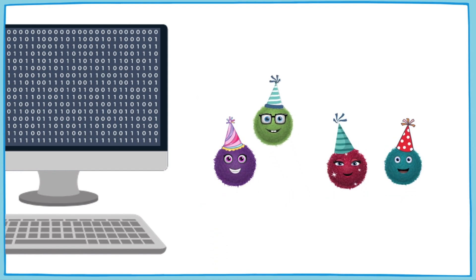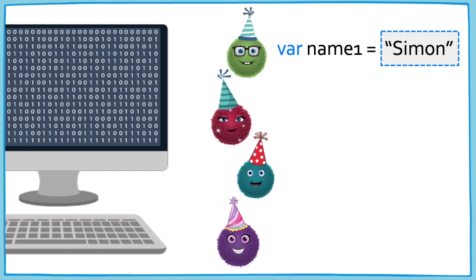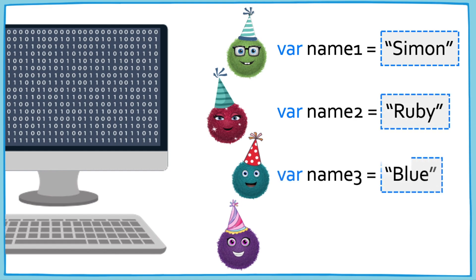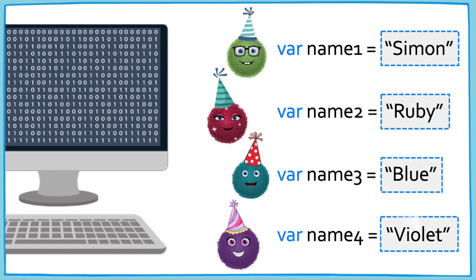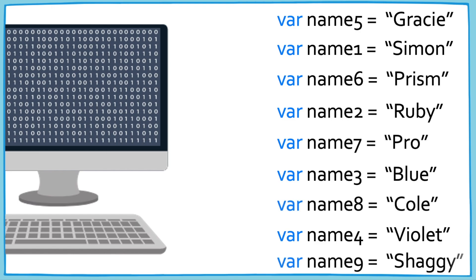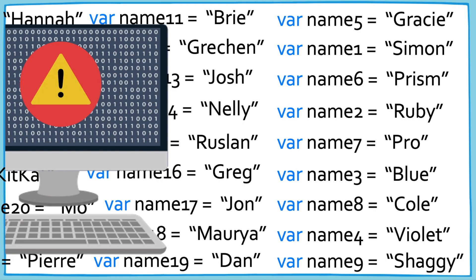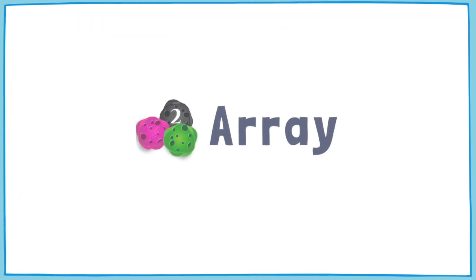For the first friend, you could create a variable and store their name as a string, like this. And for a few names, this is no big deal. But what if you wanted to invite everyone in your class or school? Do you even know how many people go to your school? It would be really hard to keep track of so many variables, especially if you don't know the number of names ahead of time. Instead, use an array.